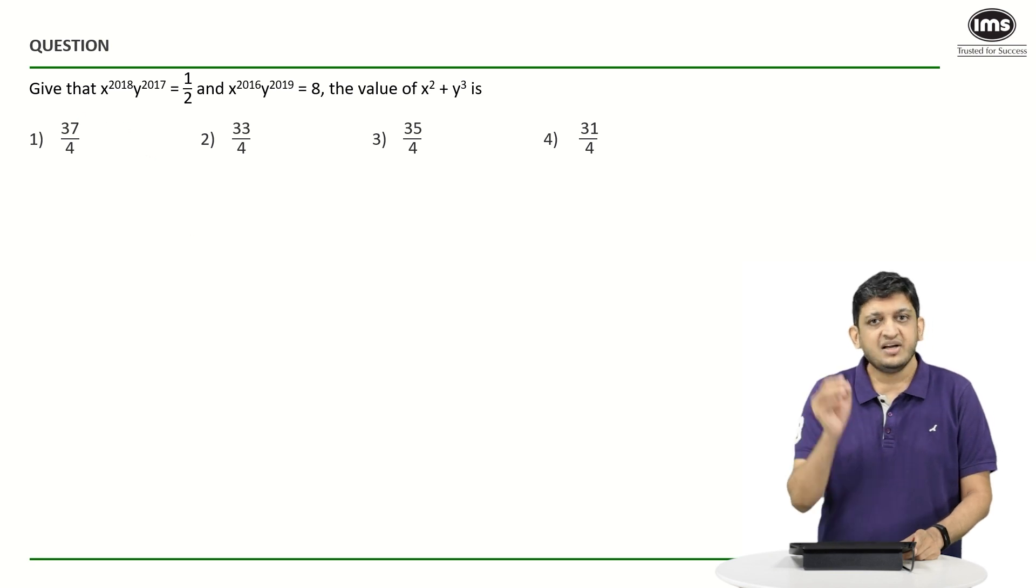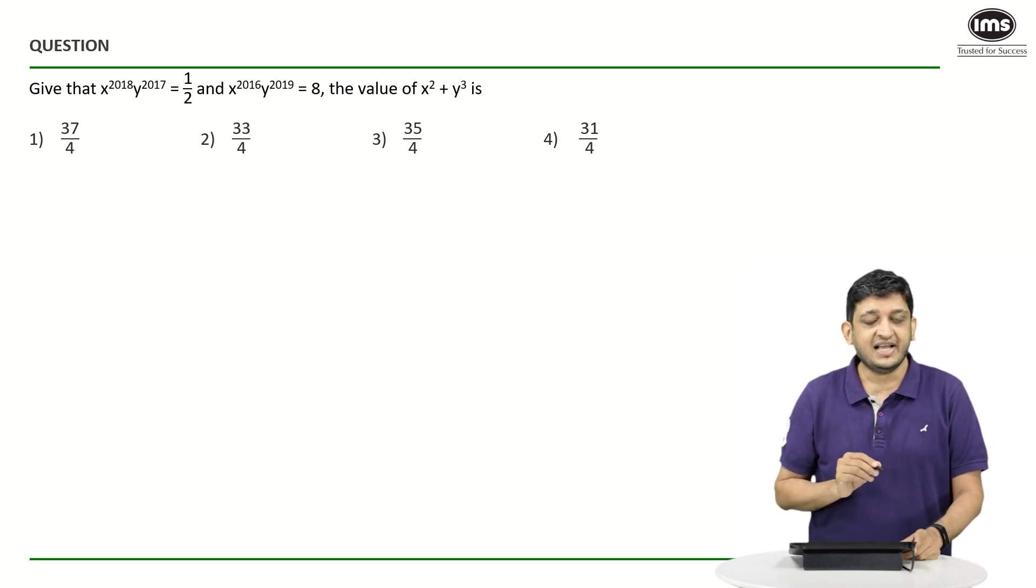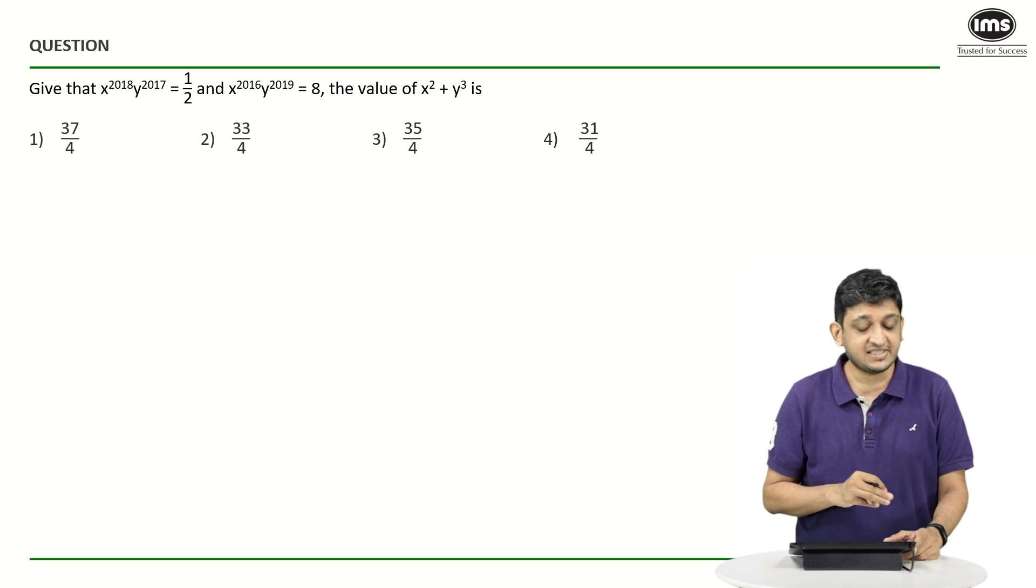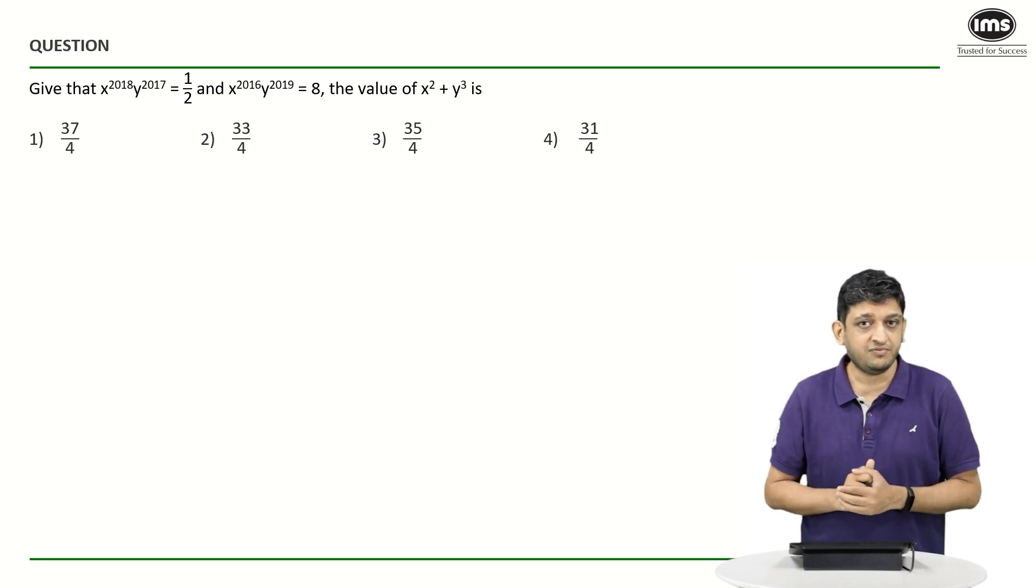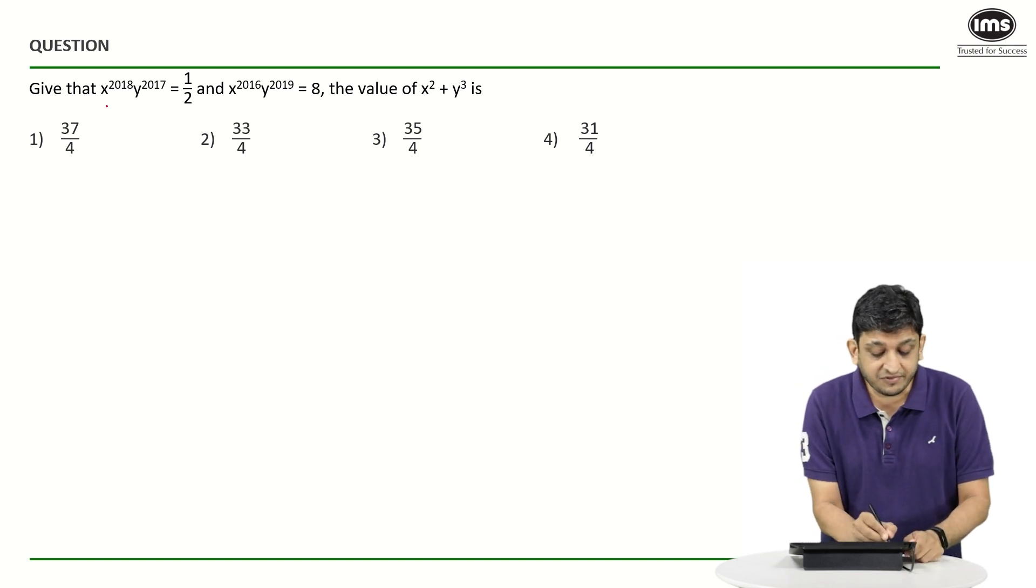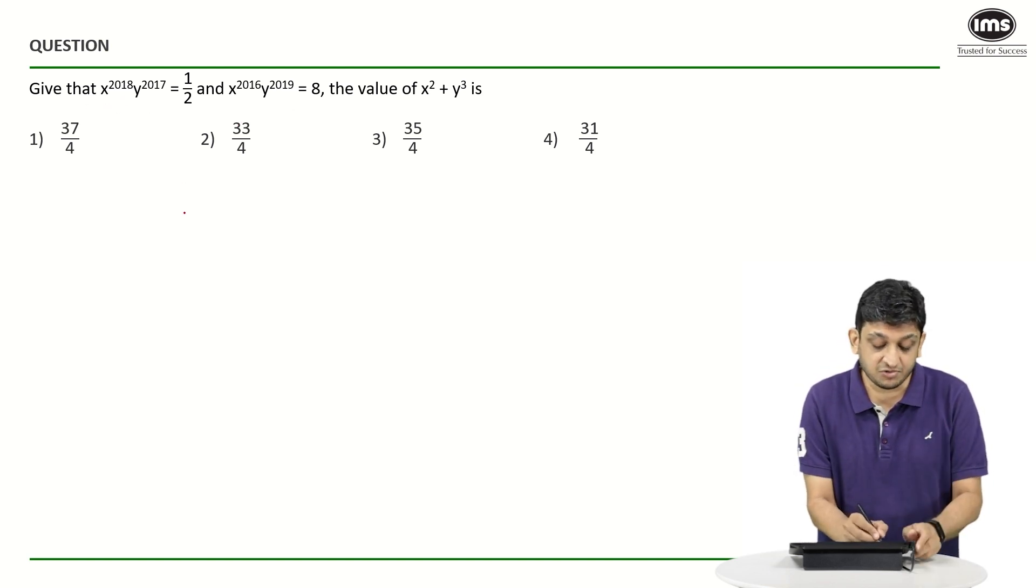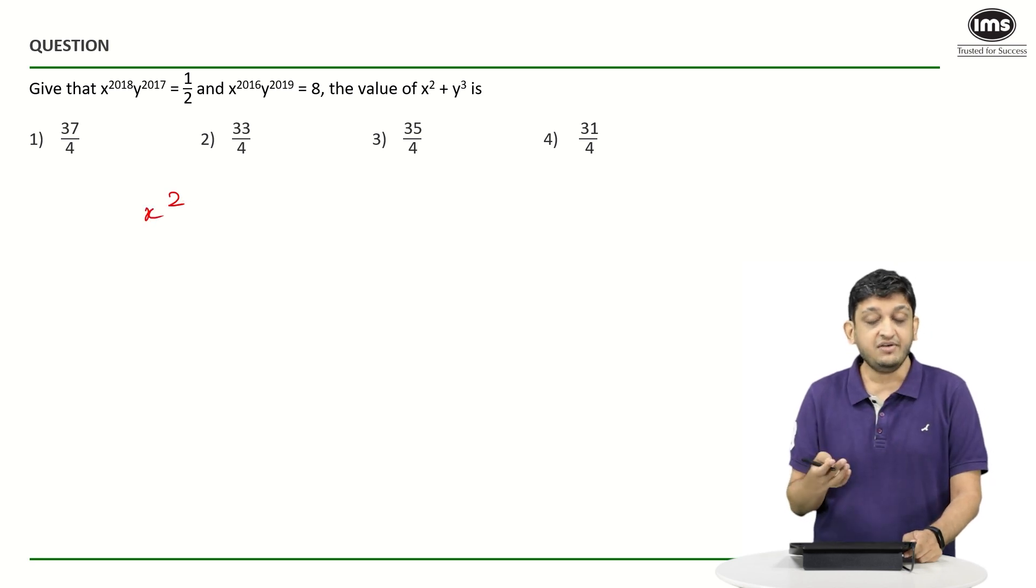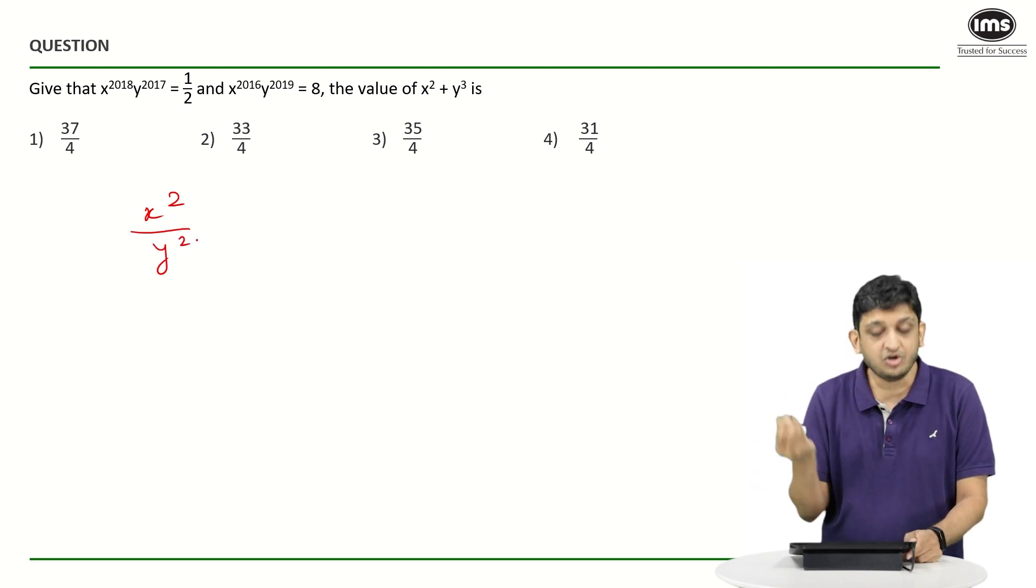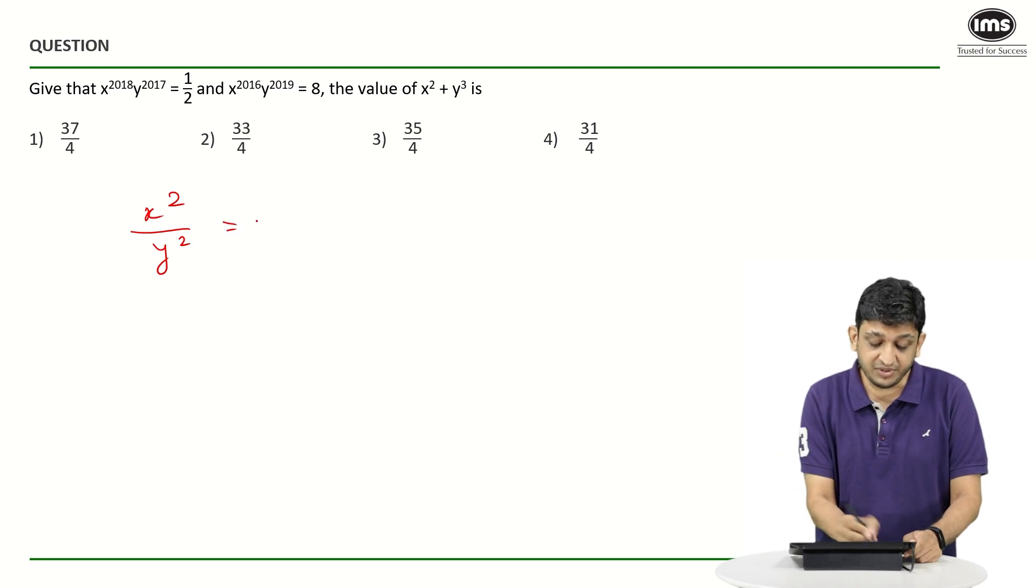What are we going to get? 2016 is going to get cancelled out when it comes to the power of X, and 2017 is going to get cancelled out when it comes to the power of Y. So what we are going to be left with is X raised to 2018 by X raised to 2016, that is X square. And in terms of Y, we are going to get Y raised to 2017 upon Y raised to 2019, or Y square in the denominator. This is going to be equal to 1 by 2 divided by 8, or 1 by 16.